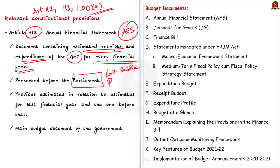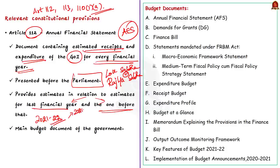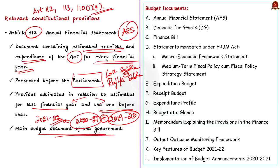The Annual Financial Statement shows the estimated receipts and expenditure of the Government of India for the next financial year in relation to estimates for the last financial year. It also provides actual expenditure for the previous financial year before the last one. For example, if the budget is for 2021-22, this will provide estimates for 2021-22 in relation to estimates for 2020-21 and the actual expenditure for the year 2019-20. This Annual Financial Statement constitutes the main budget document of the government and generally is what is referred to as the Union Budget. Along with the Annual Financial Statement, the government also presents other documents as a part of the budget.